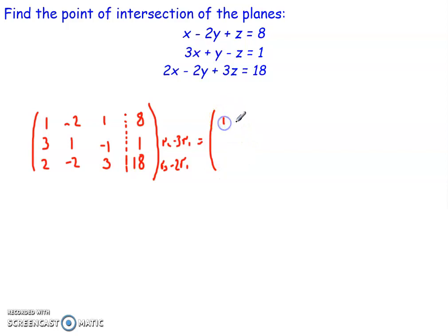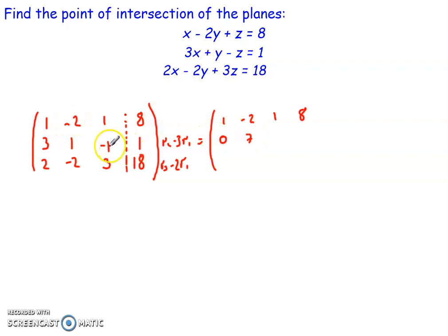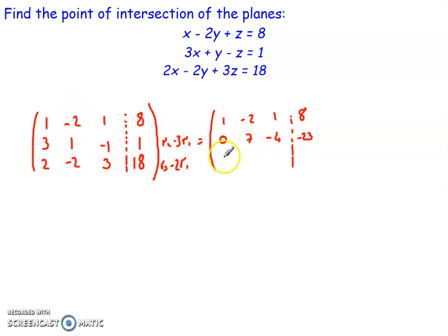Performing these operations: the top row stays as 1, negative 2, 1, 8. The second row becomes row 2 minus three times row 1: 0, 7, negative 4, negative 23. The third row becomes row 3 minus two times row 1: 0, 2, 1, 2. Continuing these elementary row operations, the goal is to eliminate values below the diagonal so they become zeros, then work back up to eliminate values above the diagonal as well.